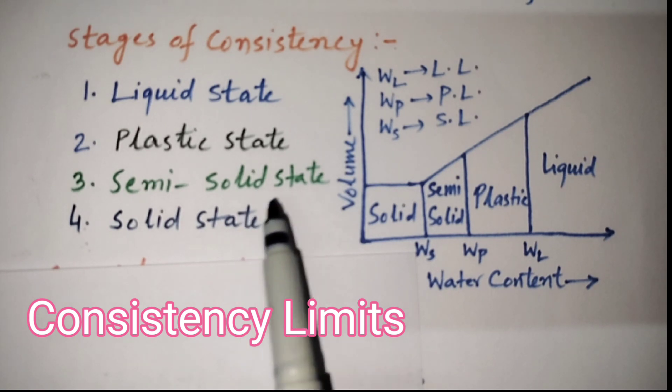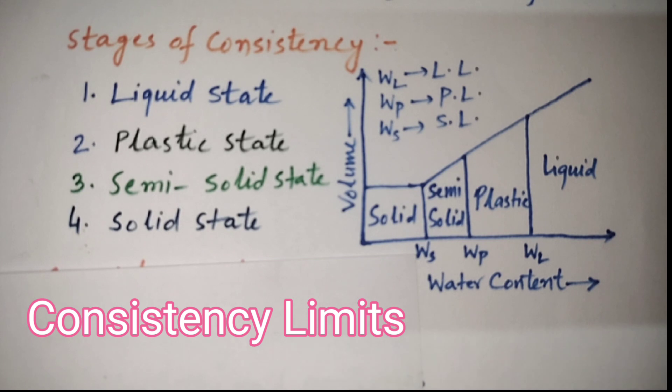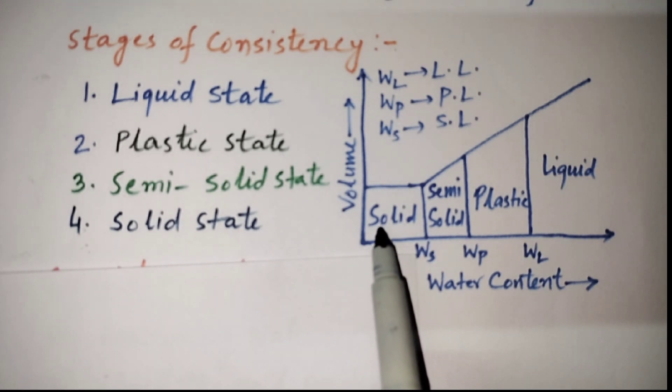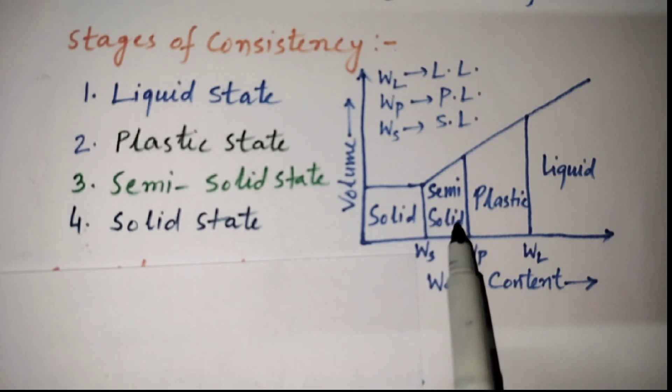The boundary water content at which the soil undergoes a change from one state to another are called consistency limits. Here we can see the different states solid and semi-solid. The boundary water content is called shrinkage limit. Here from semi-solid to plastic, the boundary water content is called plastic limit. Here from plastic to liquid, the boundary water content is called liquid limit.